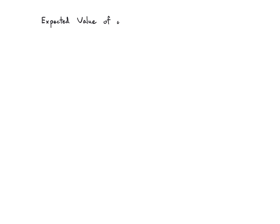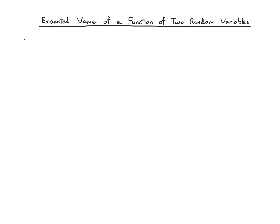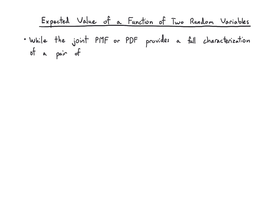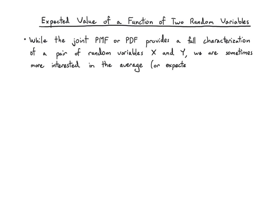Let's finally talk about expectation for two random variables. What makes the most sense here is to talk about the expected value of a function of these two random variables. We've learned that the joint PMF or joint PDF provides a full characterization of a pair of random variables — a full probabilistic description of x and y. But sometimes we might just be more interested in a quick summary via the average or expected value of a particular function, which for now we'll leave abstract.